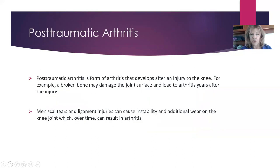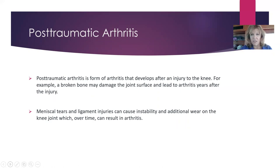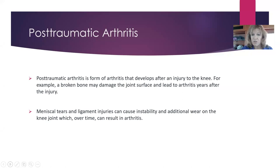There's also arthritis that happens after surgery or injury. If you've had a bone break, been casted, had an ankle pinned, a total hip replacement, a fractured pelvis or elbow — after these injuries, you can have damage to the joint surface and develop arthritis years later. Meniscal tears and ligament injuries can also cause instability and additional wear in the knee joint, which over time can result in arthritis. So a basketball player who had a meniscal tear repaired by arthroscopy may develop arthritis years later.